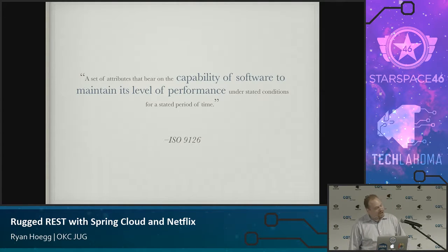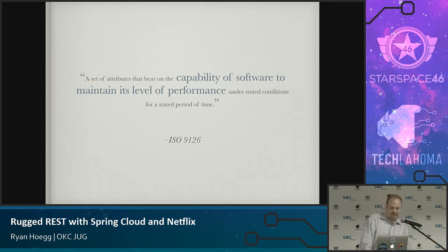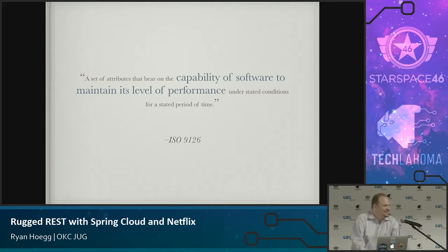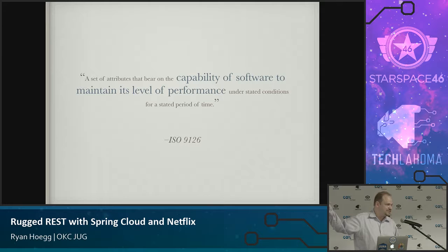This is what ISO 9126 says reliability is. A set of attributes that bear on the capability of software to maintain its level of performance under stated conditions for a stated period of time. Does it look like it was written by a lawyer? ISO 9126 is the software quality ISO standard — here's what we all agree reliability is — except nobody in this room thinks of this when it's time to talk about reliable software.